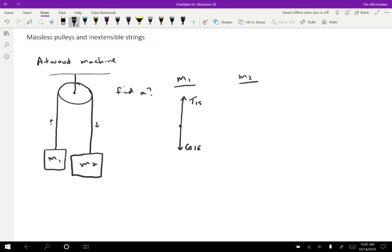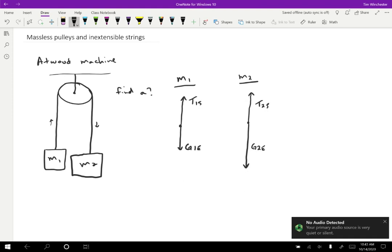For M2, we're going to have a gravitational force that's a little bigger because the object is bigger, G2E by the earth, and another tension that's not going to be enough to cancel out the force pulling downward, T2S by the string. So we have free body diagrams.